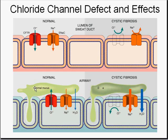Looking at another diagram: here's your normal cell with chloride and sodium going back and forth normally. Because chloride can come back in, the mucus doesn't get too thick and everything passes along nicely. But look at this darker, thicker mucus — because the mucus is hypertonic and the chloride can't get back in, this mucus is going to plug the sweat gland.